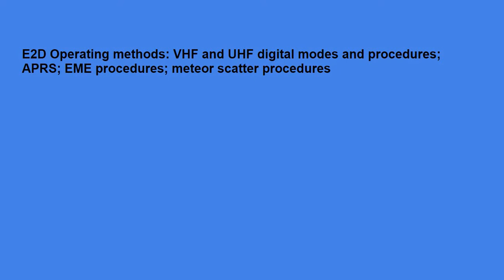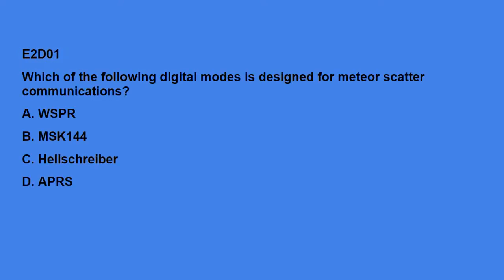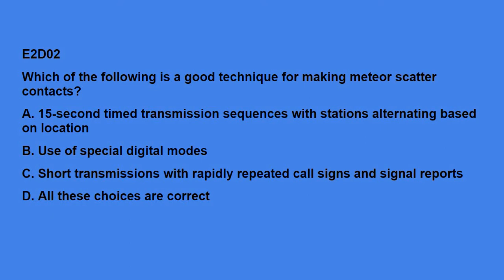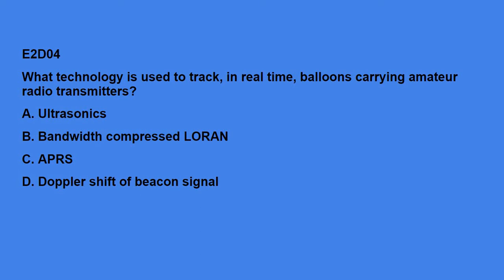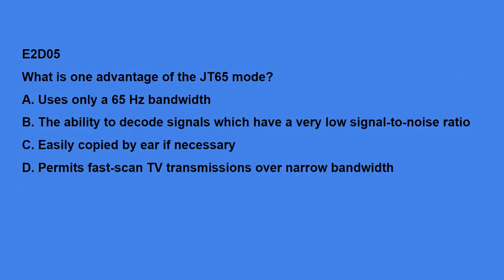E2D covers operating methods: VHF and UHF digital modes and procedures, APRS, EME procedures, and meteor scatter procedures. E2D01: Which of the following digital modes is designated for meteor scatter communications? MSK144. E2D02: Which of the following is a good technique for making meteor scatter contacts? All of these choices are correct — 15-second timed transmission sequences with stations alternating based on location, use of special digital modes, and short transmissions with rapidly repeated call signs and signal reports. E2D03: Which of the following digital modes is especially useful for EME communications? JT65. E2D04: What technology is used to track in real time balloons carrying amateur radio transmitters? APRS.